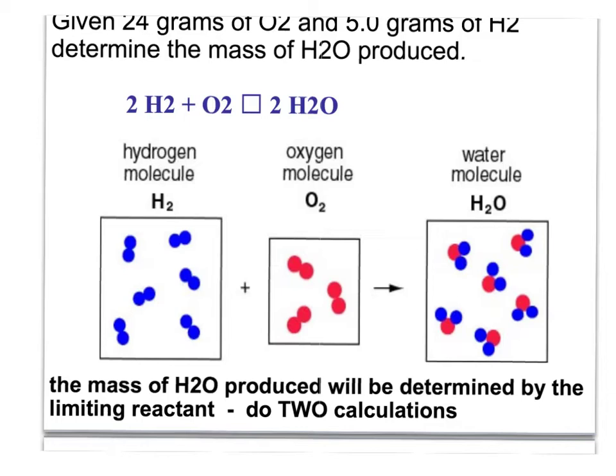Here we see the reaction: two moles of H₂ plus one mole of O₂ yields two moles of water. Previously we counted molecules, but now we're going to change mass to moles. We're going to determine this by doing two gram-to-gram calculations.